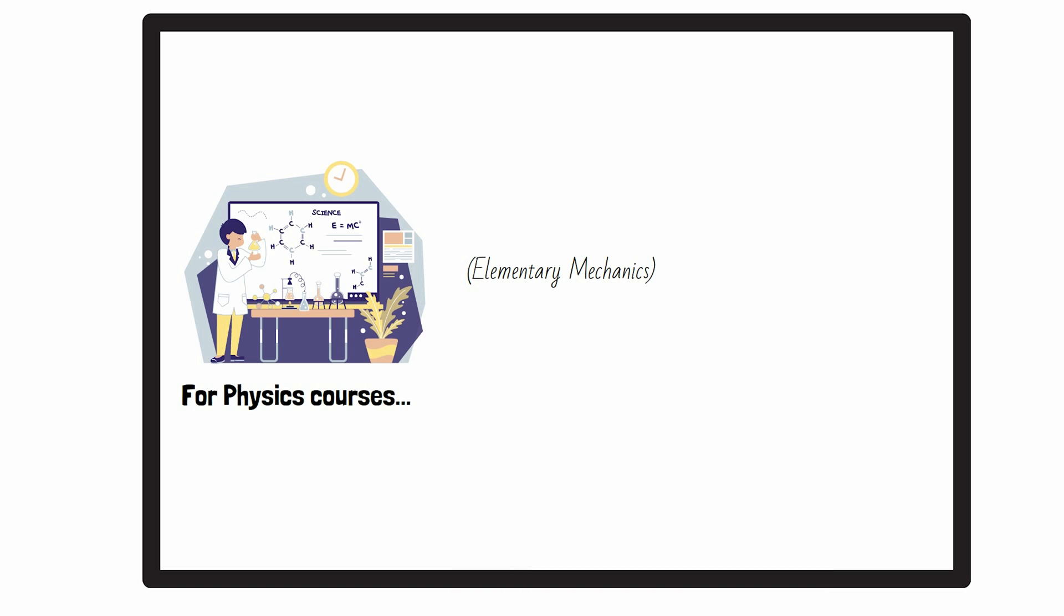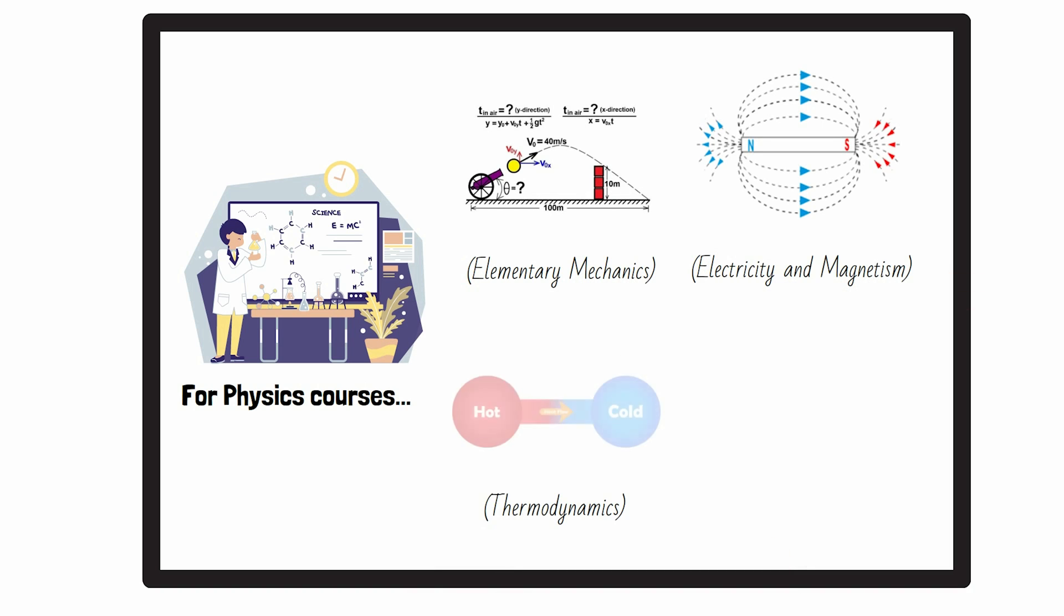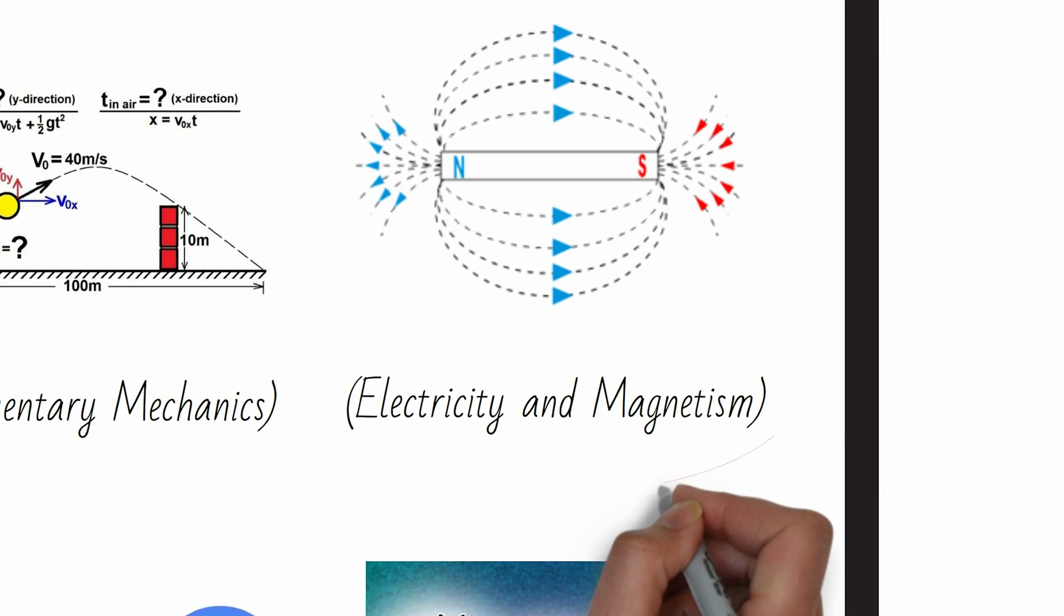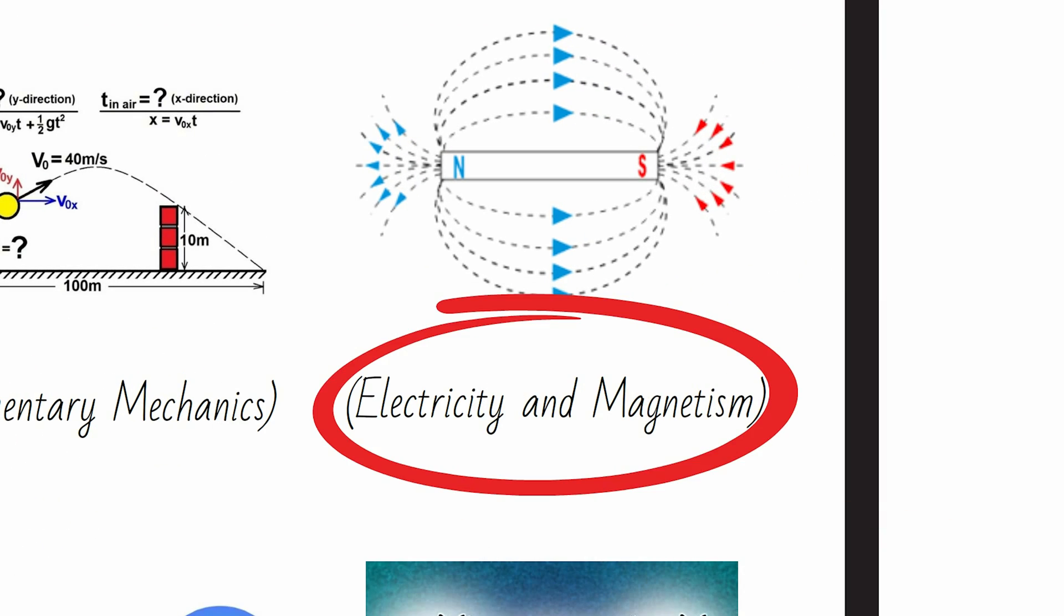For the physics courses, you'll start off with elementary mechanics and move on to electricity and magnetism, thermodynamics, and a little bit of quantum mechanics. Pay especially close attention to electricity and magnetism. It'll pay dividends later.